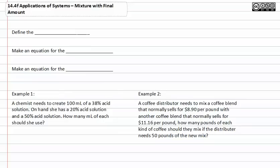When solving mixture problems with a final amount, first define the variables, next make an equation for the amount, and finally make an equation for the mix.